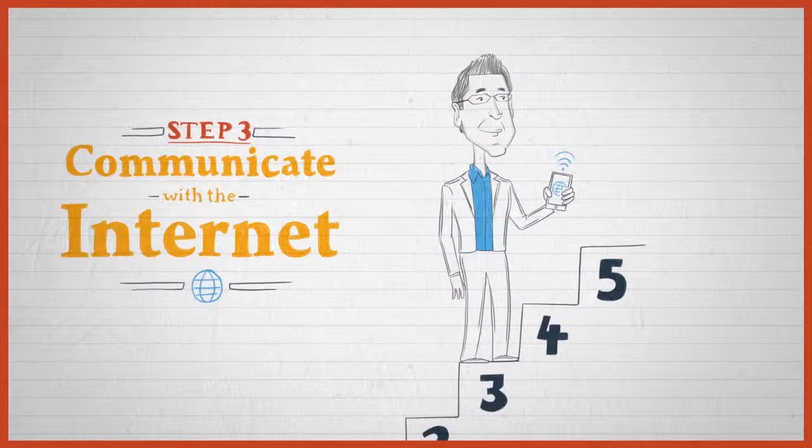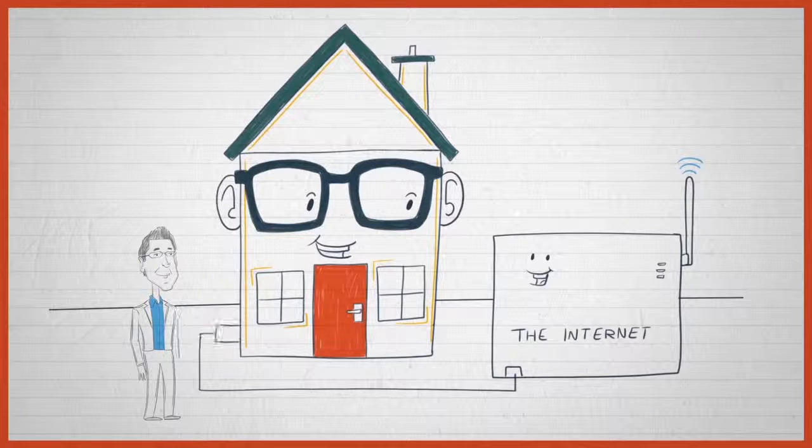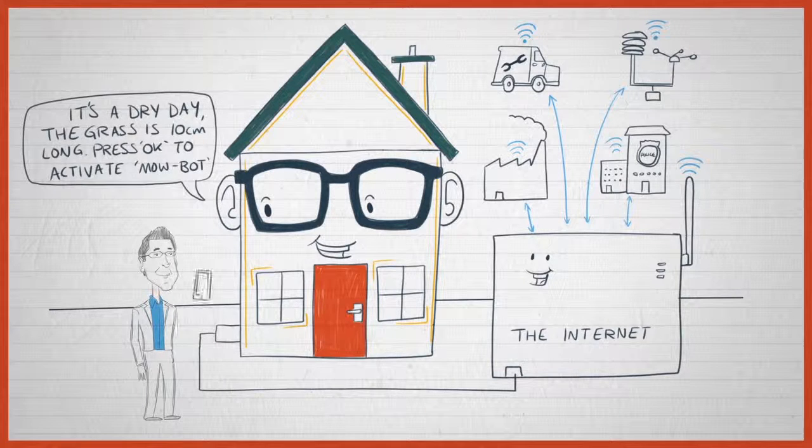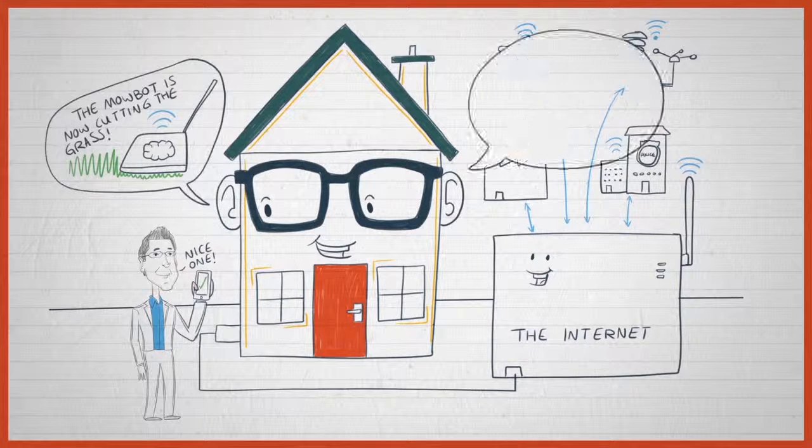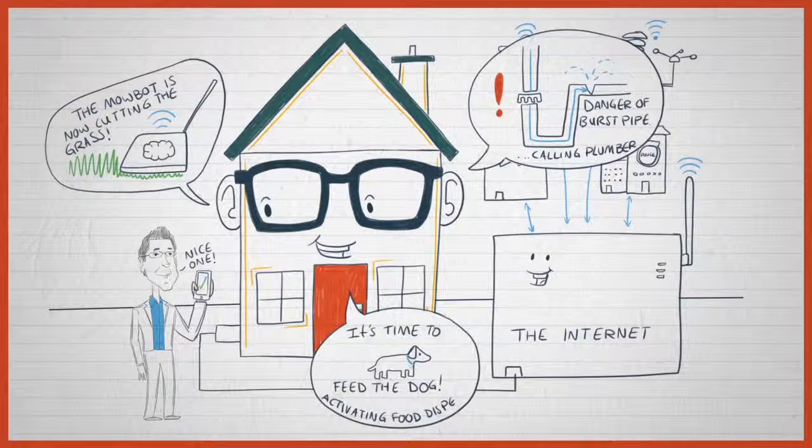Step three, we need the thing to communicate with the Internet. So we've got to add a voice. We've got to add some ears to that. We need connectivity. Now that connectivity could be wired, like a USB connector on your laptop. Or it could be wireless, like a phone connection.